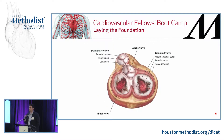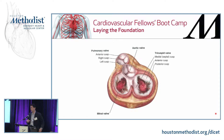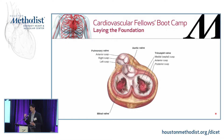Both valves have three leaflets. The tricuspid has septal, anterior, and posterior; the pulmonic has anterior, left, and right. The tricuspid annulus is the largest annulus, so you'll get the lowest flows through it. The septal leaflet of the tricuspid valve attaches just slightly more apically on the interventricular septum than the mitral does.